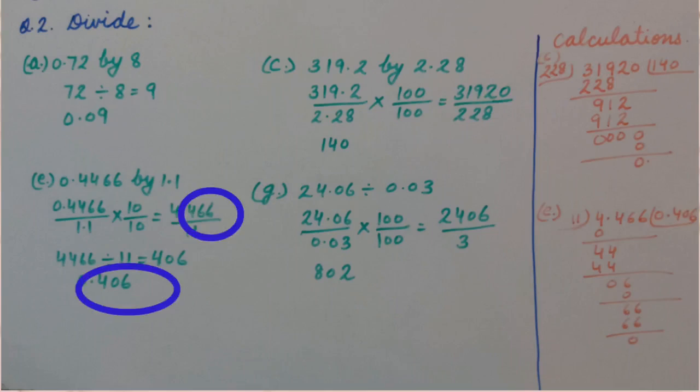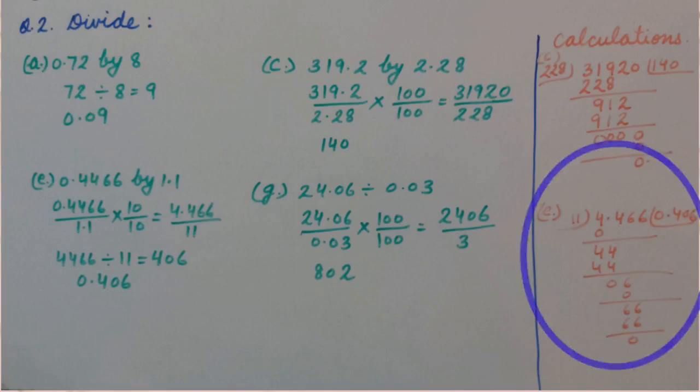The answer is 0.406. Or we can divide the decimal number directly by 11—that is, 4.466 by 11—and the answer is 0.406.